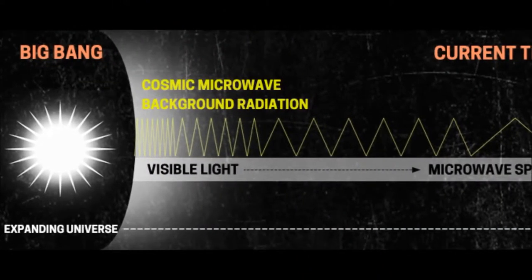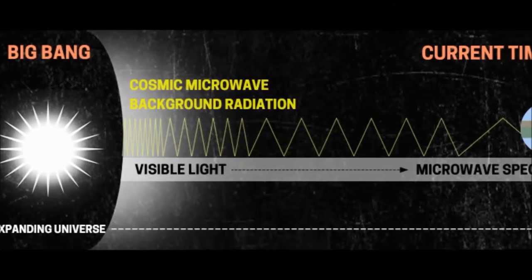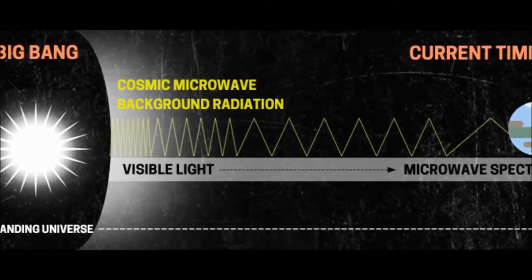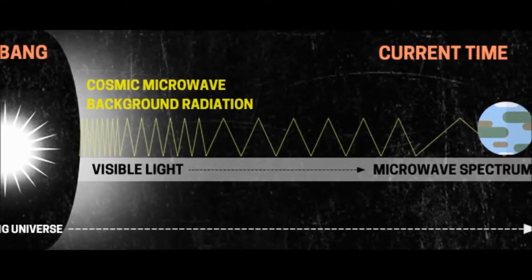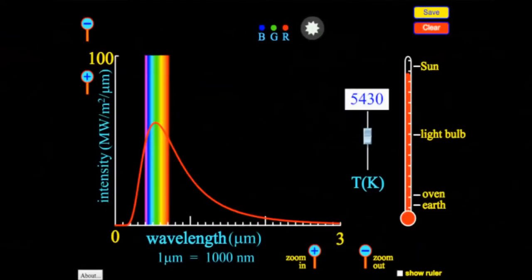However, it is believed that cosmic background radiation is all over the universe and can be detected anywhere we try to observe it. Apparently, if humans were able to see microwaves, the entire sky would glow with a consistent light all over the atmosphere.